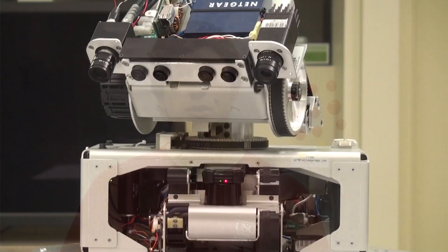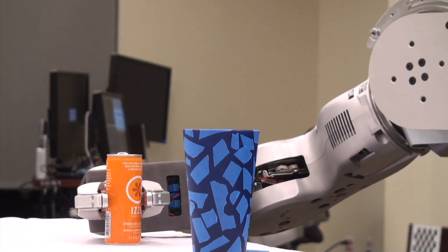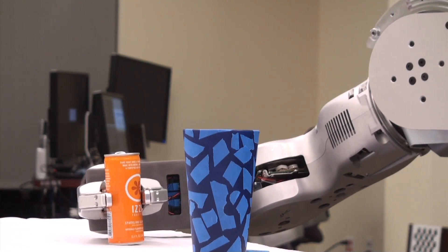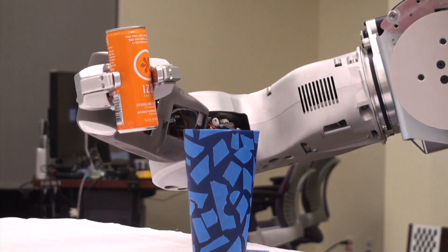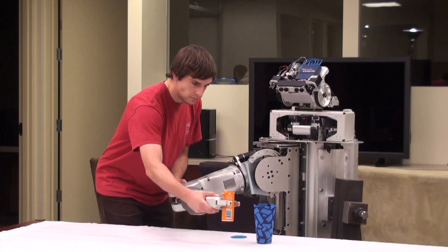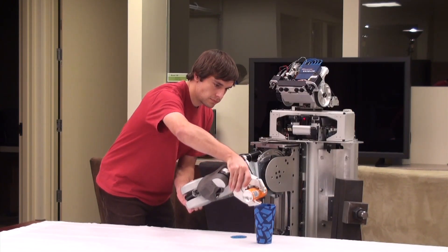This fall I've been working on enabling the PR2 robot to learn tasks from human demonstration. A personal robot like PR2 will do certain movements like reaching for a door handle or grasping a cup over and over again. My focus was on developing an imitation learning setup in which the PR2 robot learns these movements from a human.